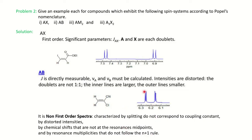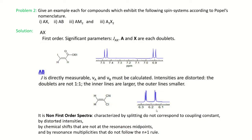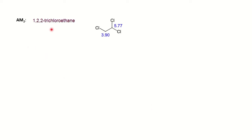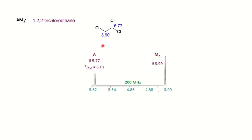For the AM2 system, we take the example of 1,2,2-trichloroethane. AM2 means one proton (A) will appear as a doublet and the other two (M2) will appear as a triplet. The single A proton at δ 5.77 is split into a triplet by its two neighboring protons, and those two M2 protons are split into a doublet by A. The pattern has symmetry along the midpoint and follows Pascal's triangle, confirming it is a first order spectrum.